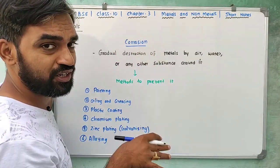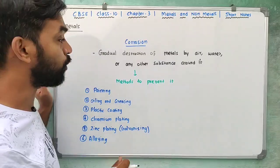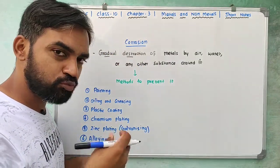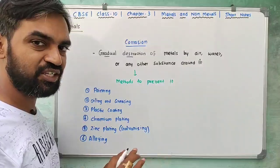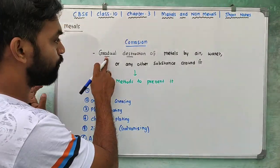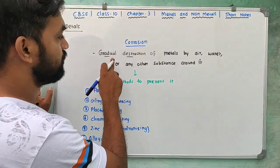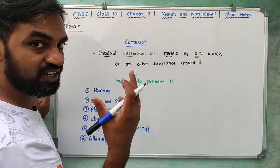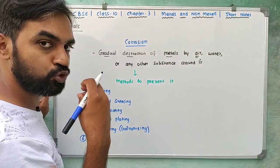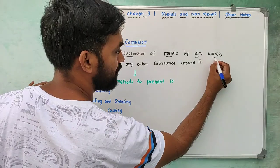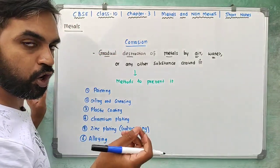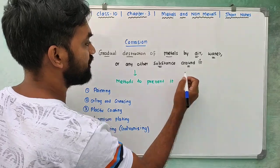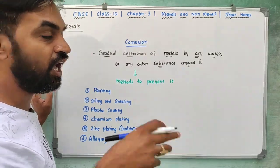Corrosion is the gradual destruction of a metal — it is slowly destroyed. This gradual destruction happens due to reaction with air, oxygen, water (H₂O), or any other substance in the surrounding environment.